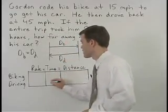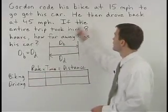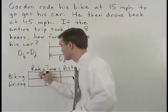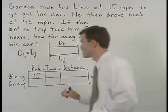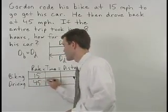Now let's fill out the chart. Gordon's rate biking is 15 miles per hour. His rate driving is 45 miles per hour.